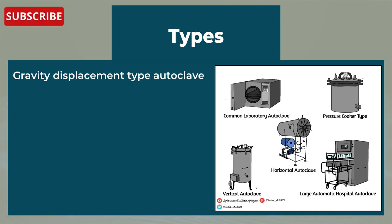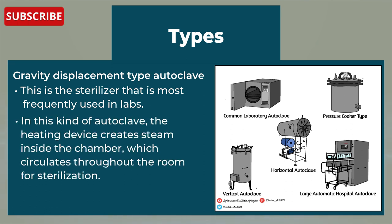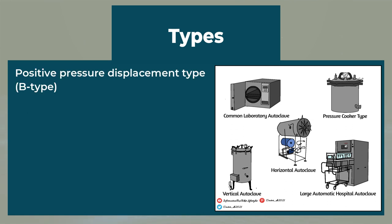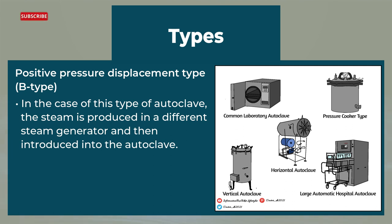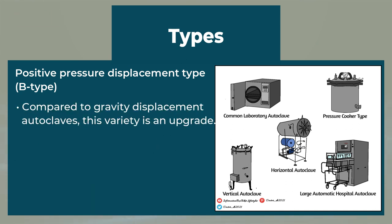Next comes the gravity displacement type autoclave, which is the sterilizer most frequently used in labs. In this kind of autoclave, the heating device creates steam inside the chamber, which circulates throughout the room for sterilization. Comparatively, this kind of sterilizer is less expensive than others. Next is the positive pressure displacement type. In this type, steam is produced in a separate steam generator and then introduced into the autoclave. This autoclave is quicker because the steam can be produced in just a few seconds, and it is an upgrade compared to gravity displacement autoclaves.